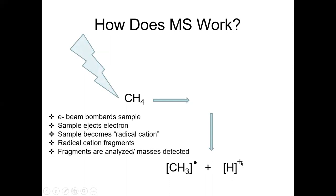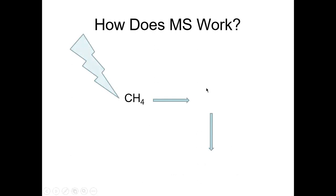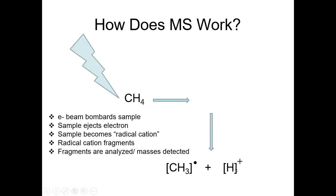In this case the methyl group becomes the radical and the proton becomes the cation. To summarize: the electron beam bombards the sample, the sample ejects one electron, the sample becomes a radical cation, and the radical cation fragments into pieces. If we look at this - the mass would be 16 grams per mole. When it becomes the radical cation and fragments, you get a fragment of 15 and one. That's how you approach mass spec: your fragments have to add up to the original mass. CH3 is 15 grams per mole, hydrogen is 1 gram per mole.